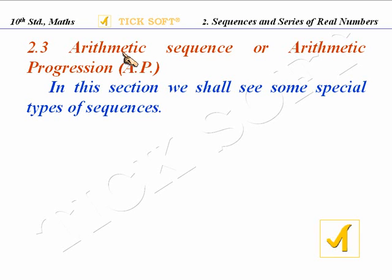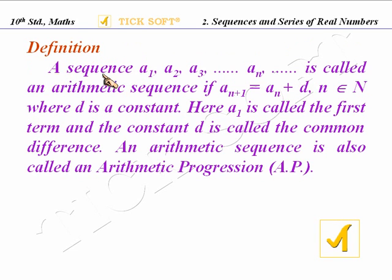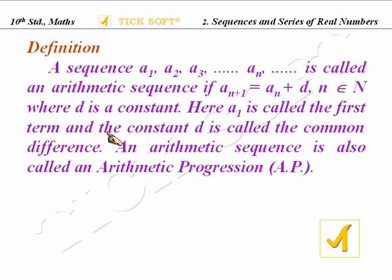2.3 Arithmetic Sequence or Arithmetic Progression. In this section, we shall see some special types of sequences. A sequence a1, a2, a3, etc., an is called an arithmetic sequence if a(n+1) equals an plus d, where n belongs to capital N, and d is a constant. Here a1 is called the first term, and the constant d is called the common difference.